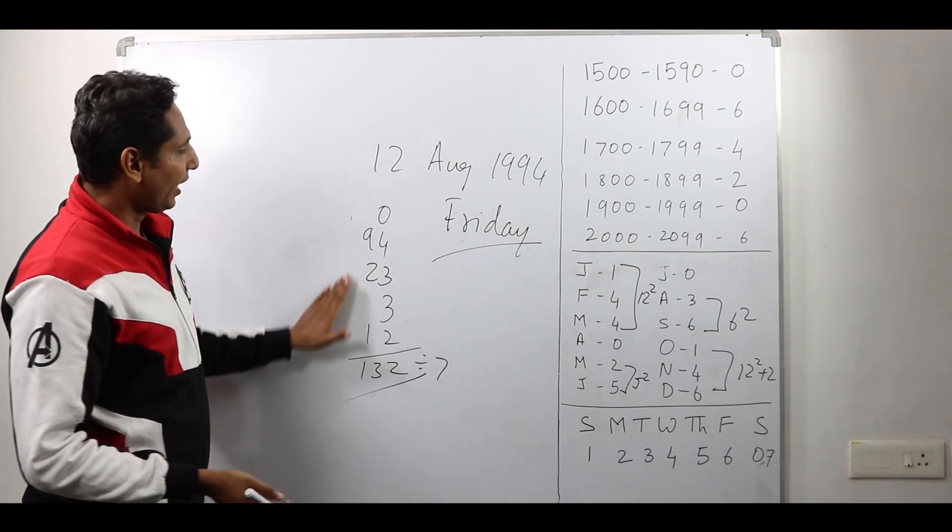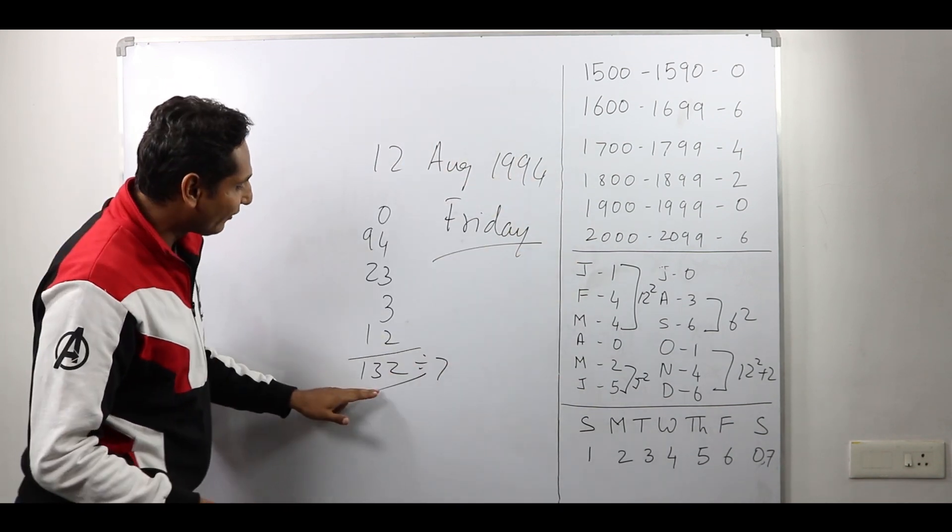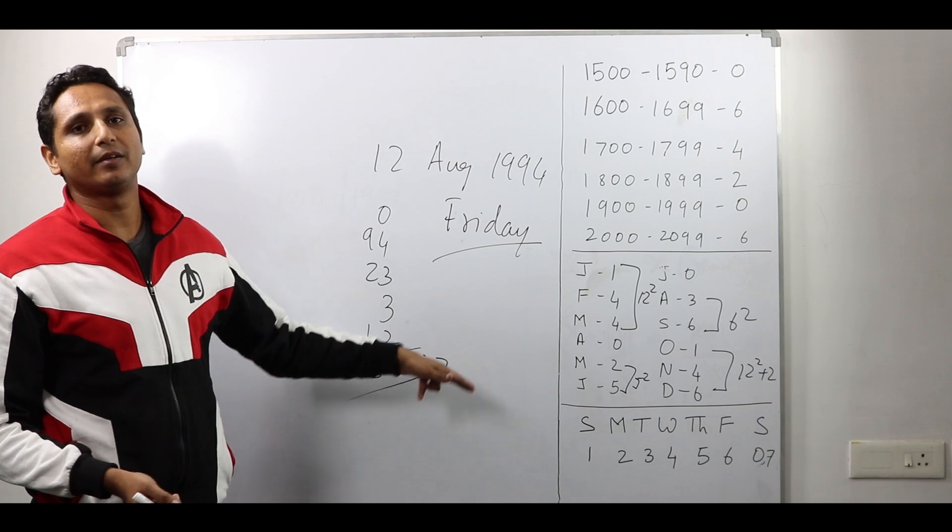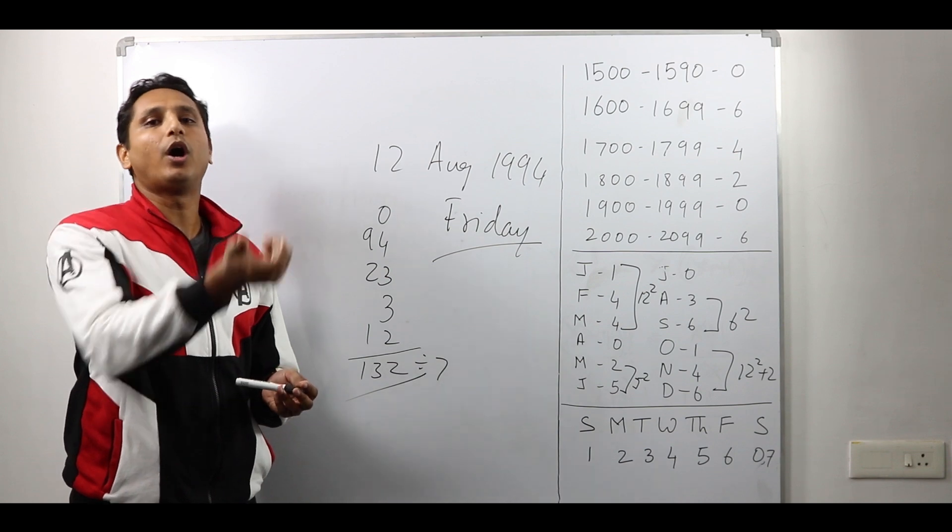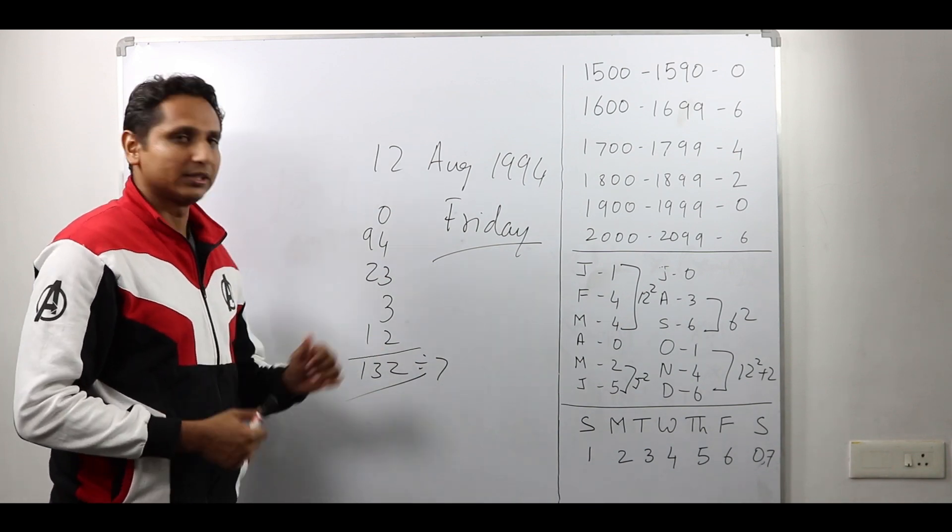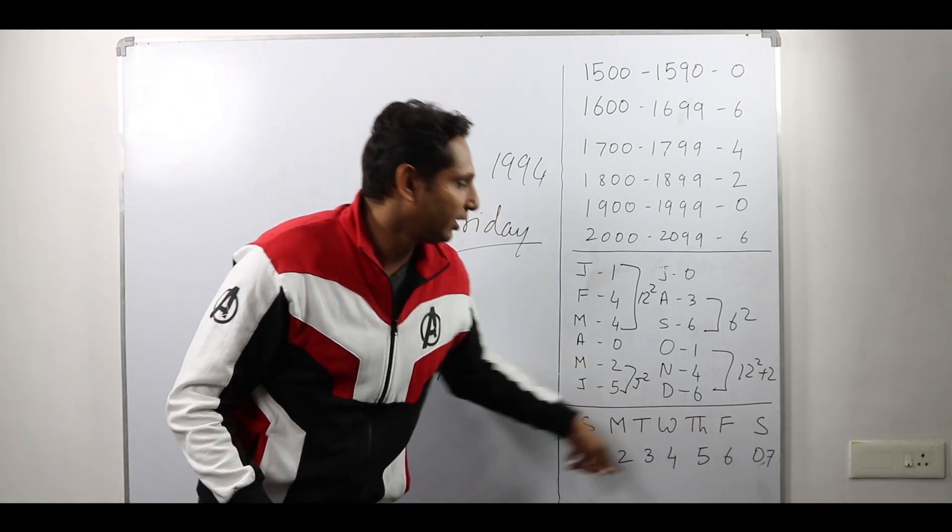We have added the values with respect to the codes. And then finally, the sum is divided by 7. Because 7 is the number of days in a week and we have to find out the odd days of this sum. The odd days will be the remainder which will give you the day.